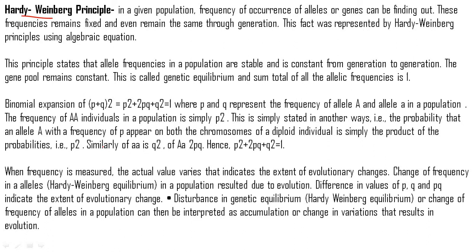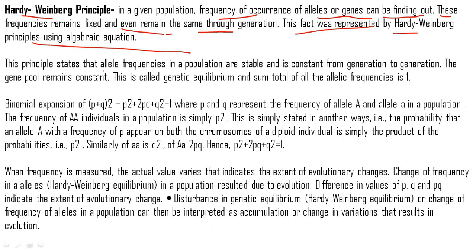In 1908, G.H. Hardy and W. Weinberg independently proposed that in sexually reproducing individuals, gene or allelic frequency remains constant from generation to generation irrespective of their phenotypic expression. The Hardy-Weinberg law or principle has provided genetics as a tool to determine whether a population is evolving or not. This is done by comparing gene or allele frequencies calculated some years back with the present-day frequency. The deviation indicates the degree of evolutionary change. The frequency of a particular allele is calculated by the equation p + q = 1.